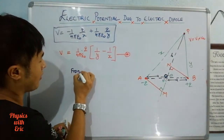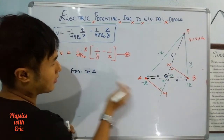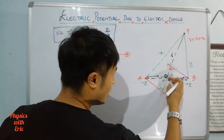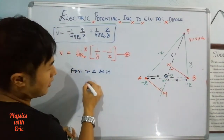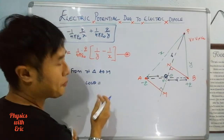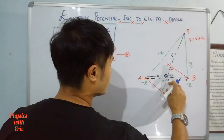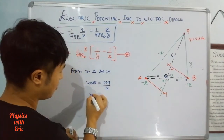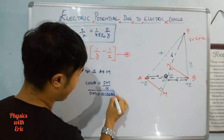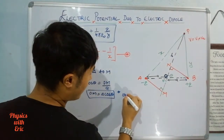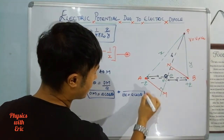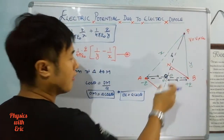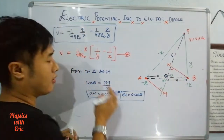From right triangle AOM, we find OM by using cos theta equals OM divided by the hypotenuse a, giving OM equals a cos theta. Similarly, ON equals a cos theta. Now for a dipole — which is typically a molecule — the dipole length 2a is extremely small compared to the distance r. So the dipole length is very small compared to r.